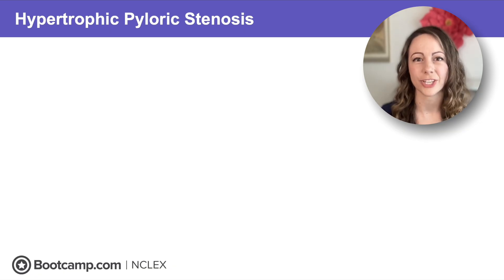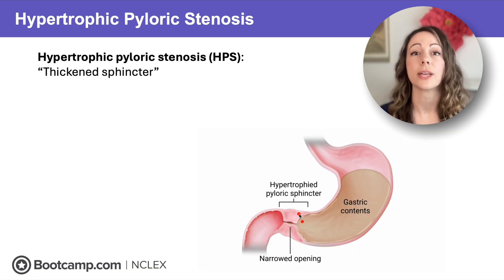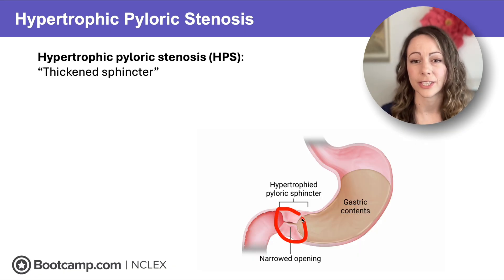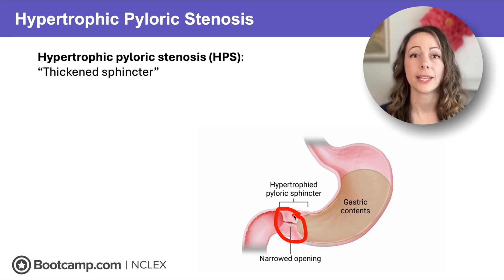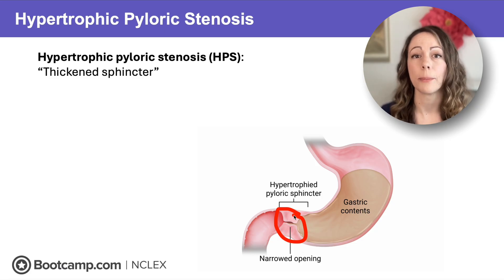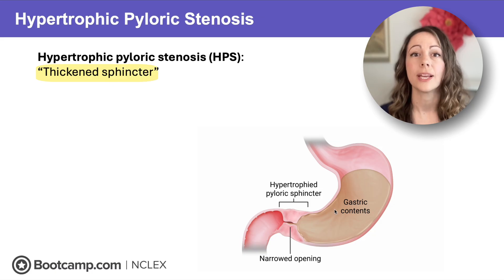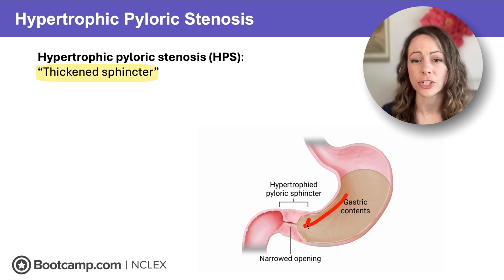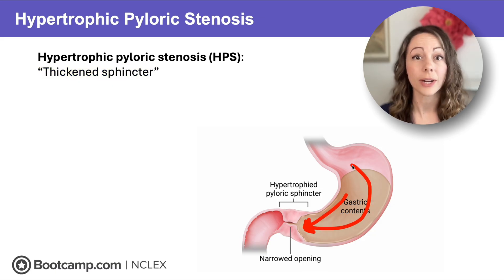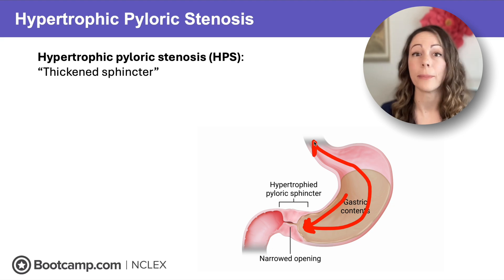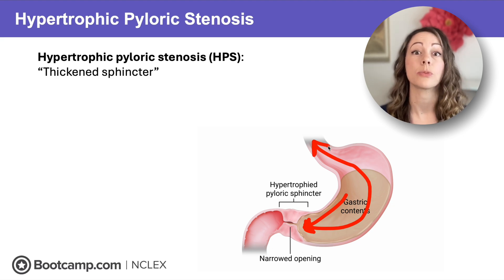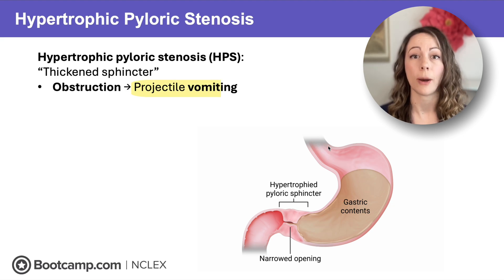We'll start at the top of the GI tract. Between the stomach and the small intestine there's a pyloric sphincter. When this sphincter gets really thick, it's called hypertrophic pyloric stenosis — think thickened sphincter. No food can pass, so pressure and food build up within the stomach and have nowhere to go except up and out the mouth, causing projectile vomiting.